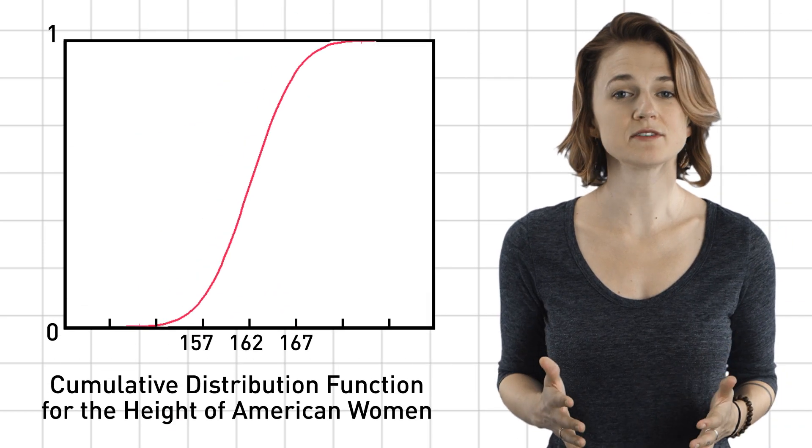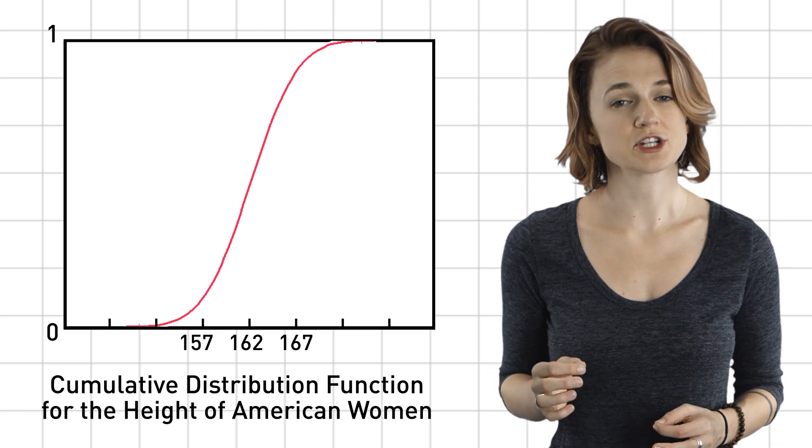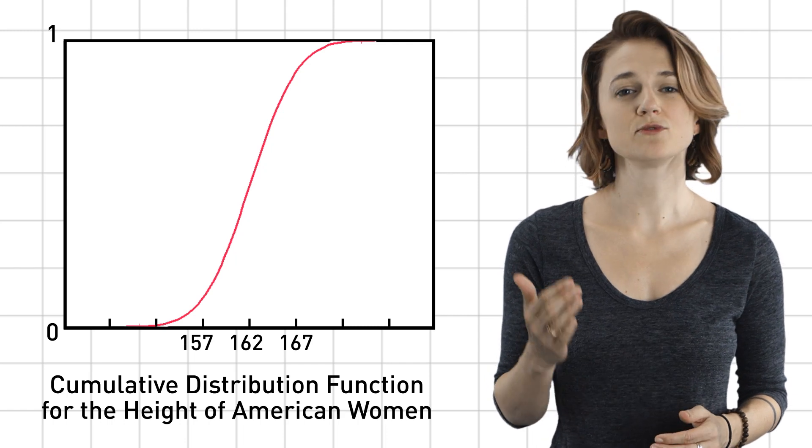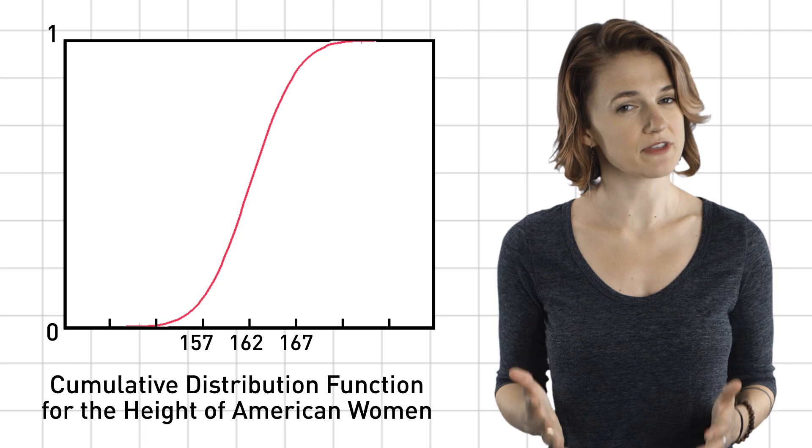This is the cumulative distribution function for the heights of American women. The value of the function at a point x tells you the probability that a randomly selected woman will be shorter than x.